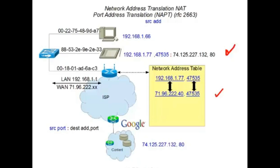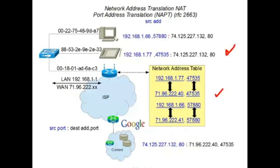The source port doesn't change with network address translation. Google will see a publicly routable IP source address in the request and will send the response back to the gateway. Because that public address is bound to my private address, the gateway simply substitutes the private address in the response and continues routing the message back to my tablet. If a second request is made from the local area network to the same destination, a second binding will take place in the router with a different public IP address, as the router has a pool of assigned public addresses it can bind to TCP connections.